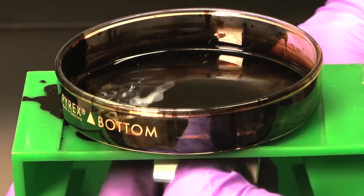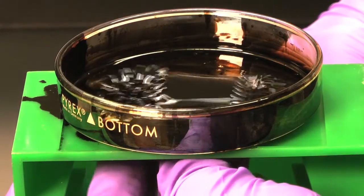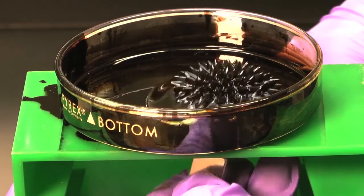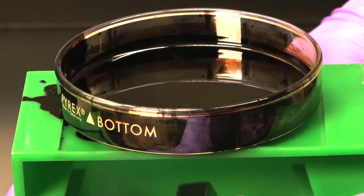The spikes come from a complex interaction of forces. The magnetic force wants the fluid to follow the field lines, and the surface tension wants to make its surface area as small as possible. A ferrofluid's characteristic spikes are the compromise.